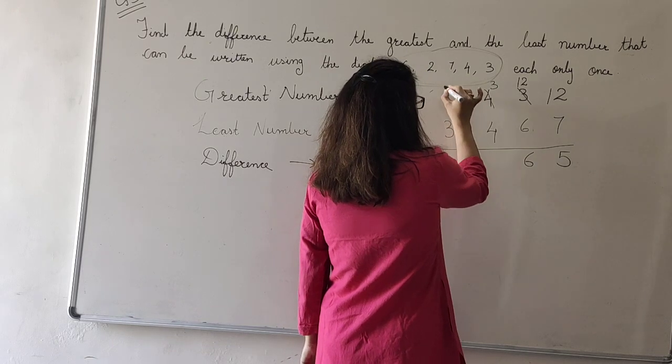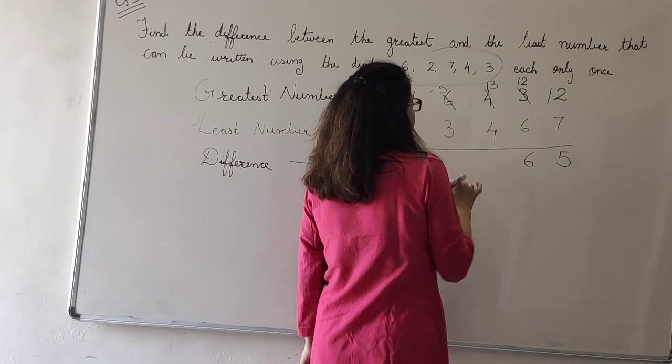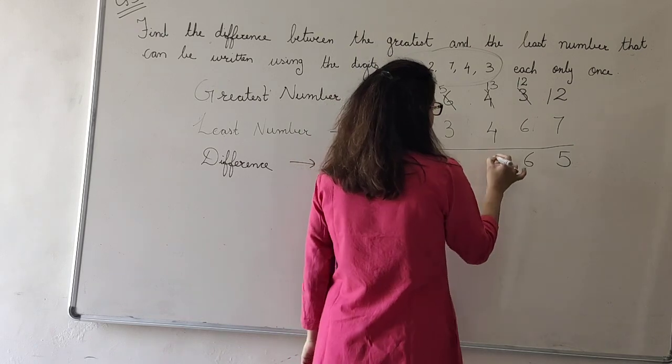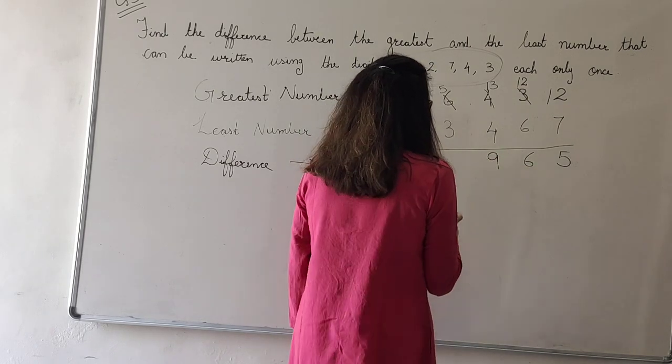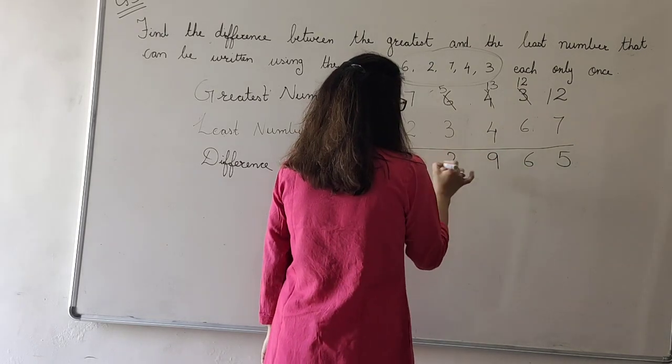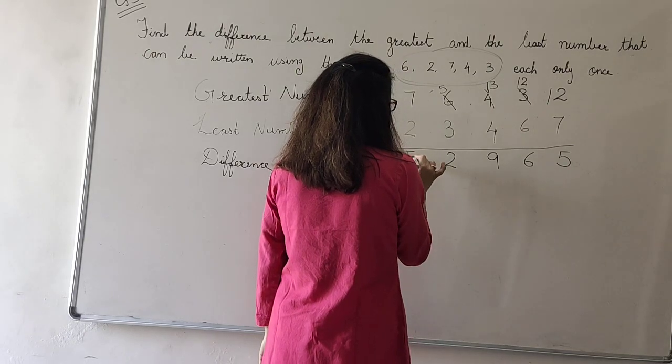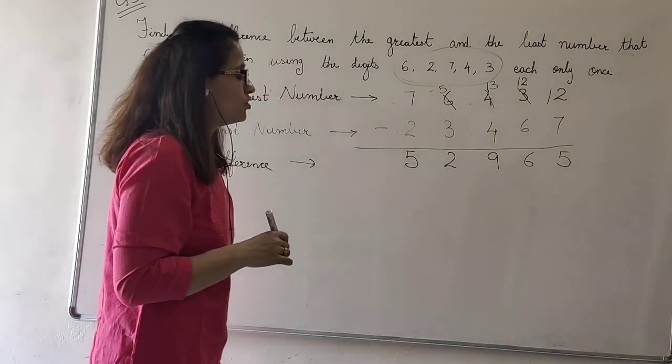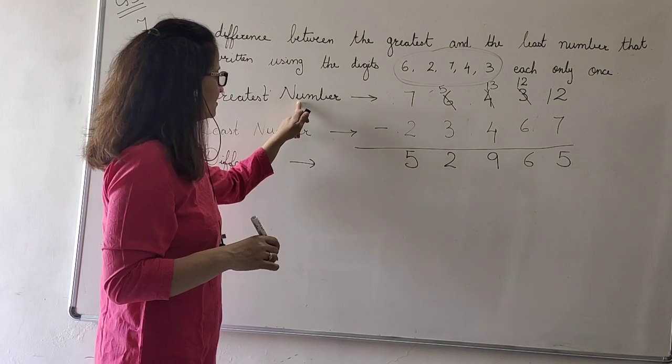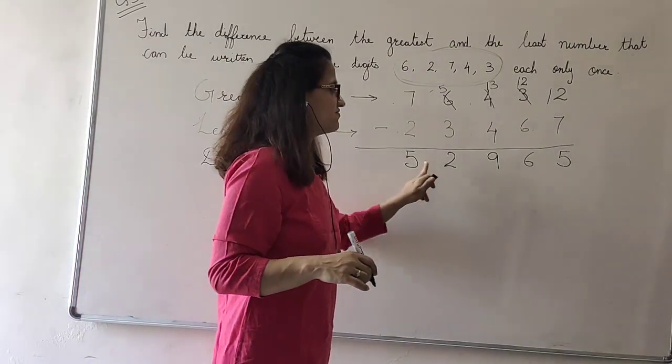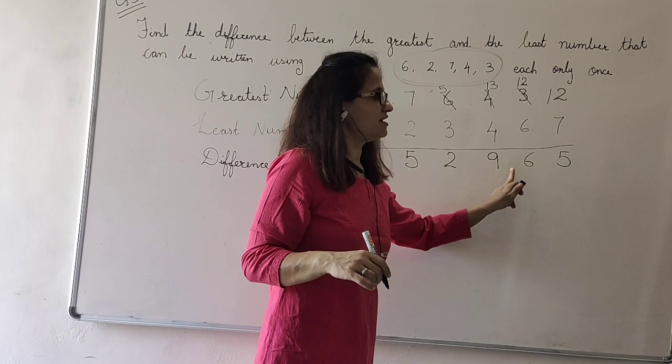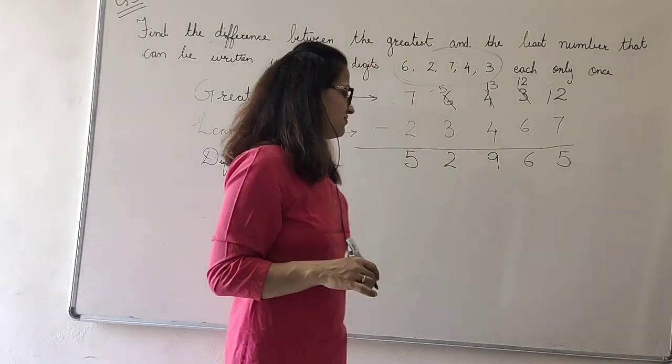Same way, this will become 5 and this will become 13. 13 minus 4 becomes 9. 5 minus 3 becomes 2. 7 minus 2 becomes 5. So, the difference between the greatest number and the smallest number is 52,965.